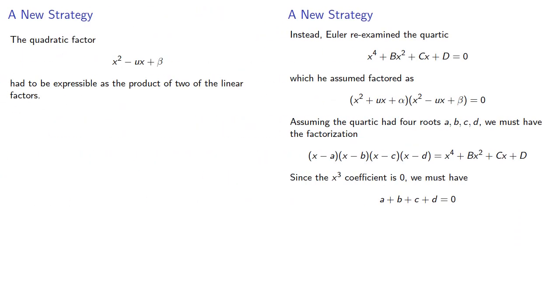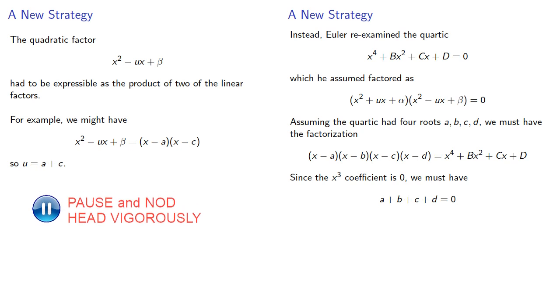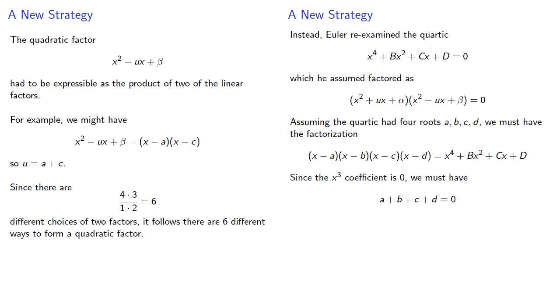Now, this quadratic factor had to be expressible as the product of two of the linear factors. For example, we might have u squared minus ux plus beta be the product of x minus a and x minus c, and this means that u is equal to a plus c. And since there are four choose two, six different choices of the two factors, it follows that there are six different ways to form a quadratic factor, and so this coefficient u has six possible values.